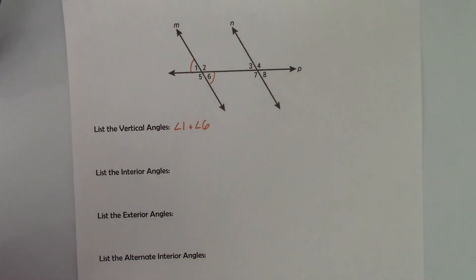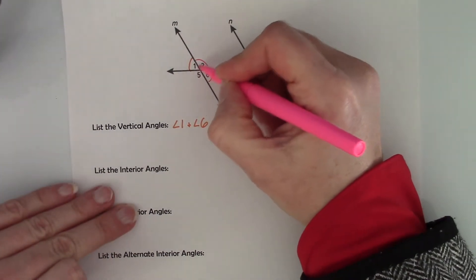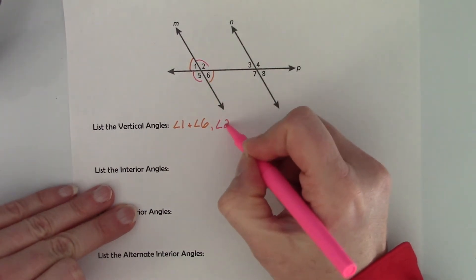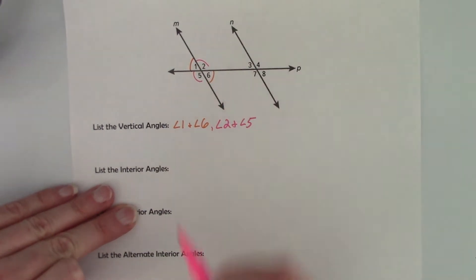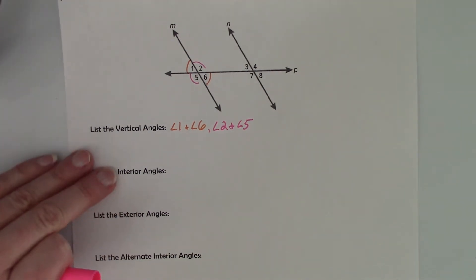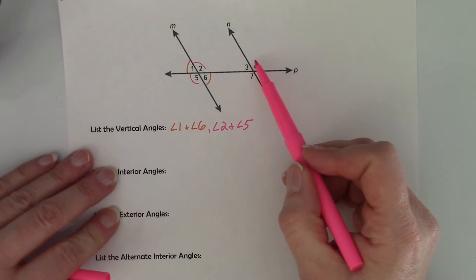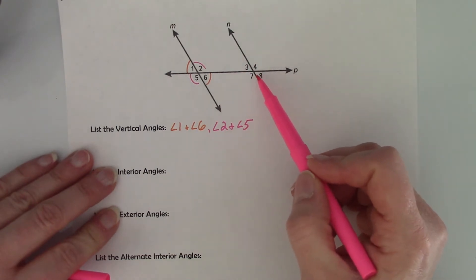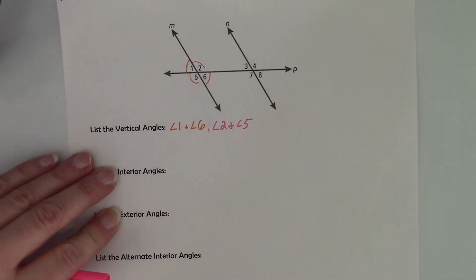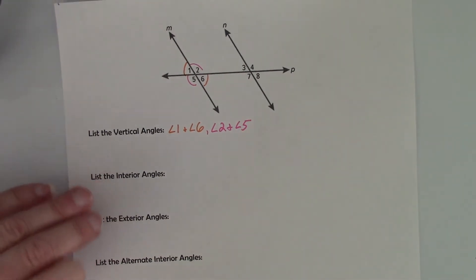I'll use a different color. So angle 2 and angle 5 are vertical angles. Now pause the video for a second — I want you to write down the vertical angles found off of line N and P. That was the intersection of those two lines. Pause the video, I'll give you a second to do that.